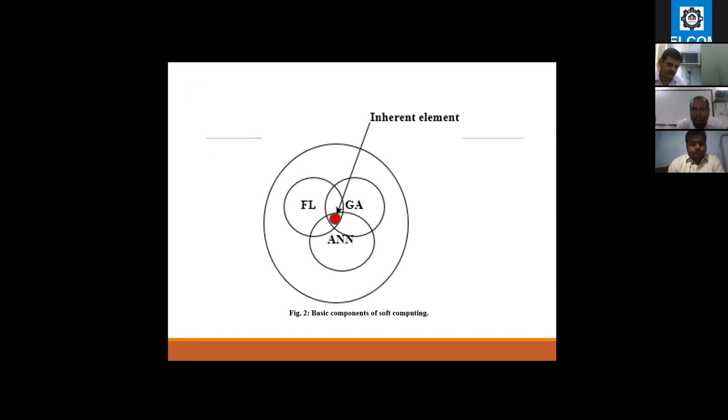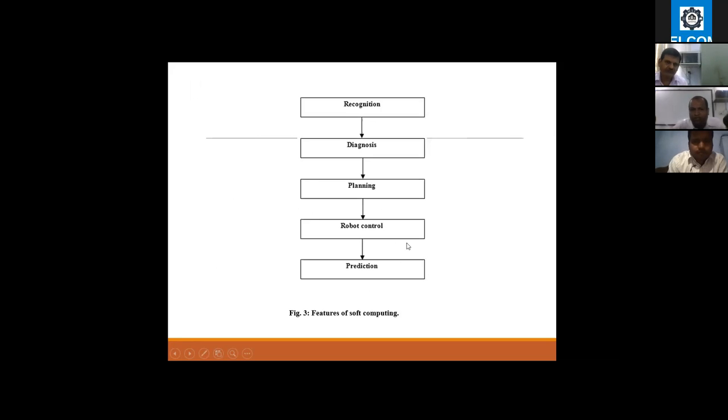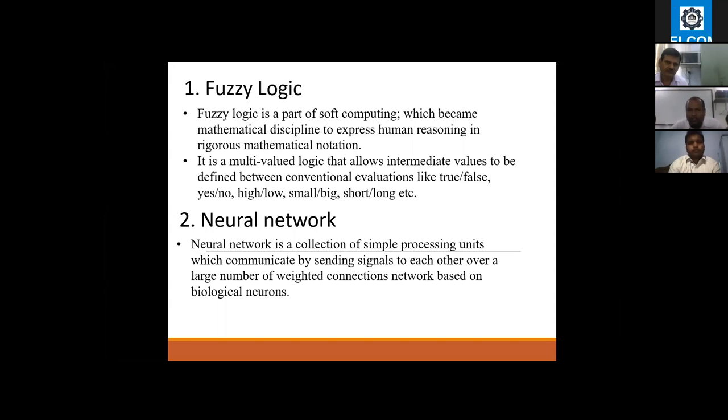Here is the FL, GA, and ANN integration. One diagram is related to this showing all soft computing techniques. These sub-techniques have some features. You have to decide from artificial intelligence.